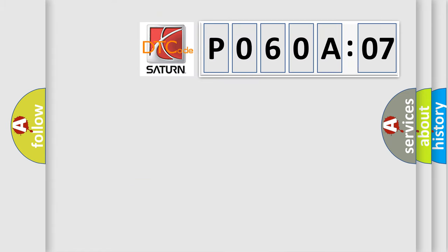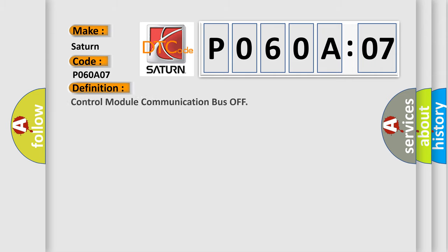So, what does the diagnostic trouble code P060A07 interpret specifically for Saturn car manufacturers? The basic definition is Control Module Communication Bus Off. And now this is a short description of this DTC code.